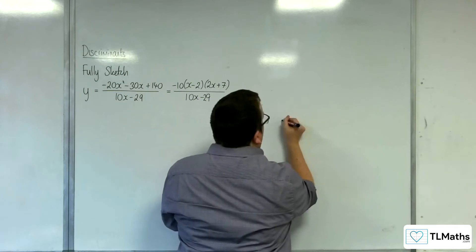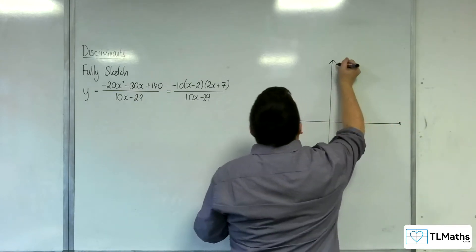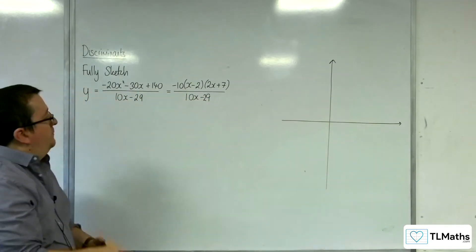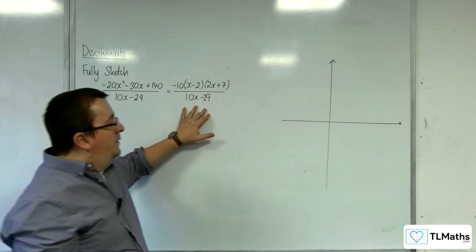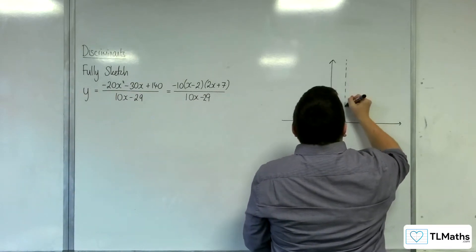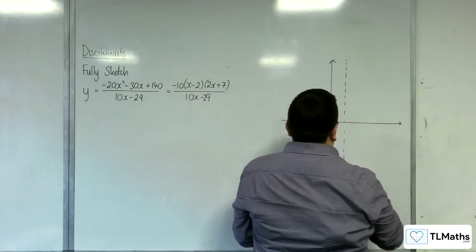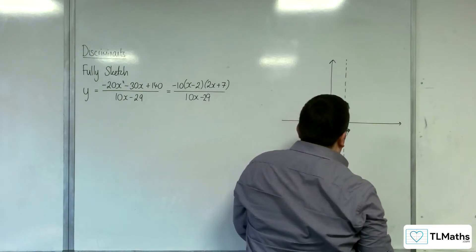Over 10x, take away 29. Let's start going in with the sketch. Vertical asymptotes. They'll exist when the denominator is 0, so that'll be at 29 tenths. 29 tenths, 2.9.